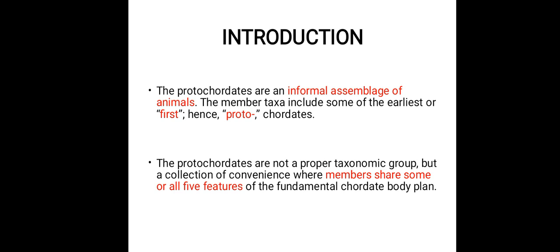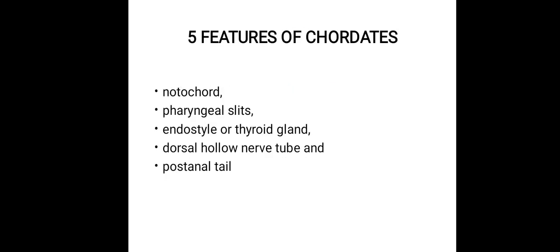So proto-chordates are organisms that possess some or all five features of the fundamental chordate body plan. Now, you might want to know what these five fundamental features are. They include: 1. Presence of notochord; 2. Presence of pharyngeal slits; 3. Endostyle or thyroid gland; 4. Possession of dorsal hollow nerve tube; and 5. Presence of post-anal tail.